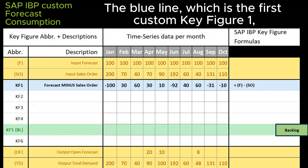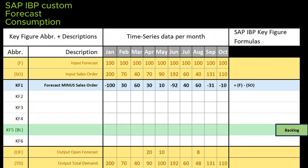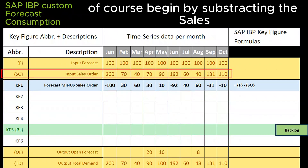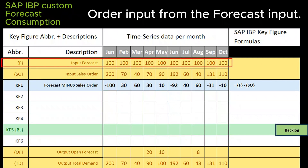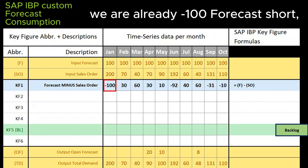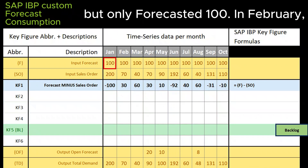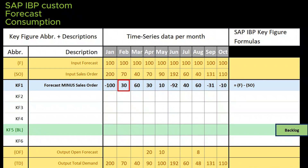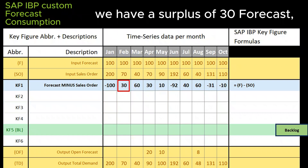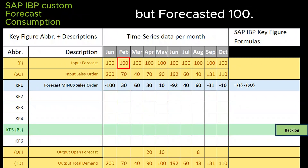The blue line, which is the first custom key figure 1, abbreviated KF1, is fairly straightforward. Namely, we will begin by subtracting the sales order input from the forecast input. We notice that in January, for example, we are already minus 100 forecast short, since we had 200 sales orders but only forecasted 100. In February, we have a surplus of 30 forecast, since we only had 70 sales orders but forecasted 100.